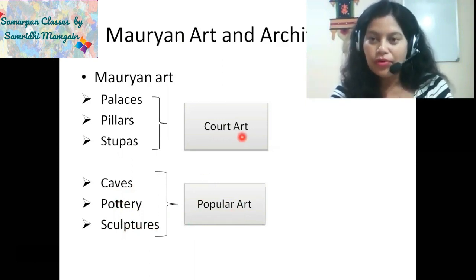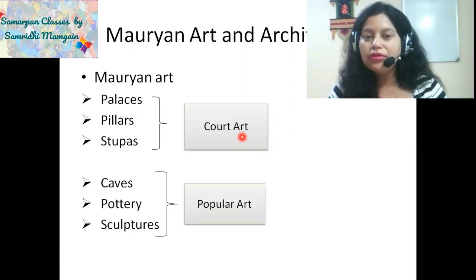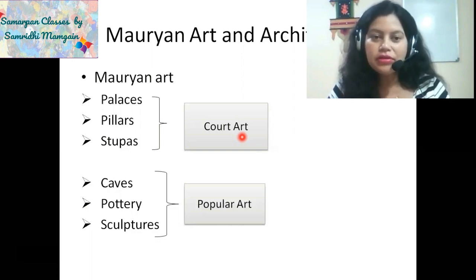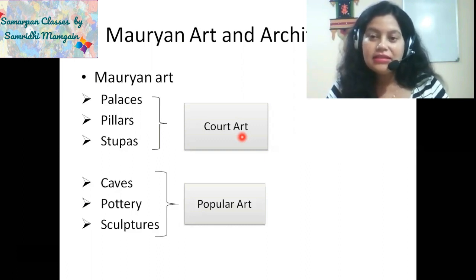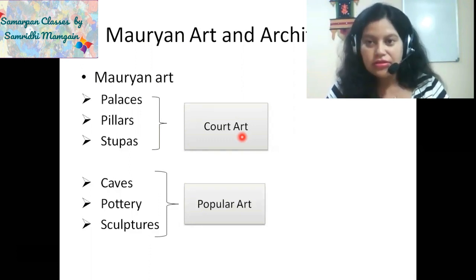Before talking about the pillars, stupas, and palaces — that means the court art — the 6th century BC was important. In the 6th century BC, it marked the birth of two important religions in India: Jainism and Buddhism. India is the birthplace of three important religions — Hinduism, Jainism, and Buddhism. Indian art is mainly inspired from these three religions and is deeply rooted in religion.